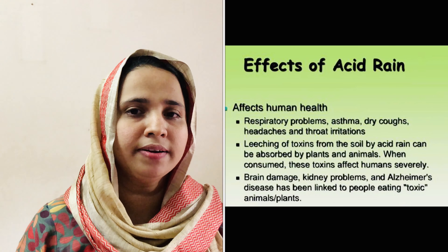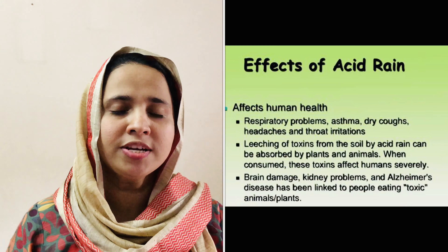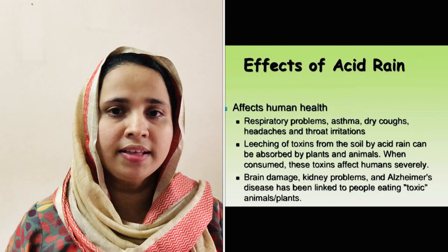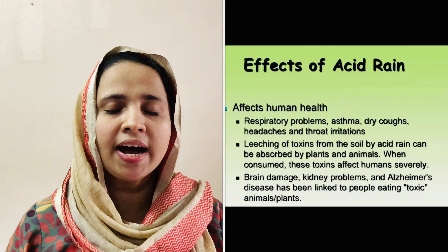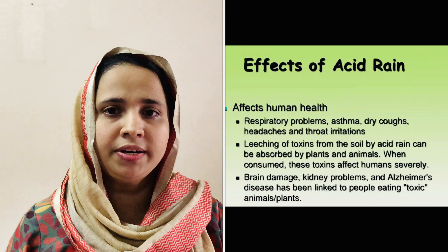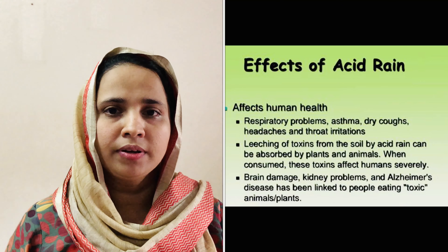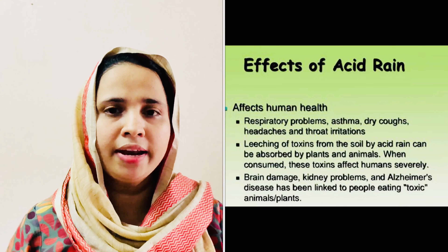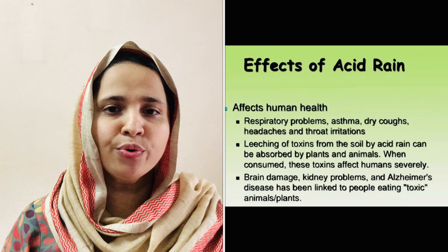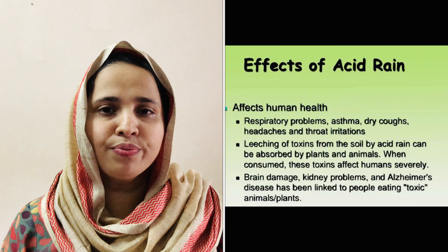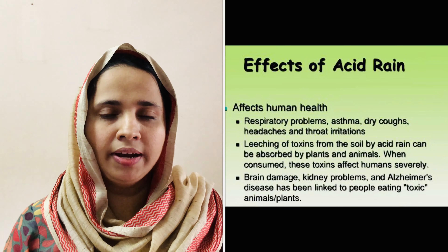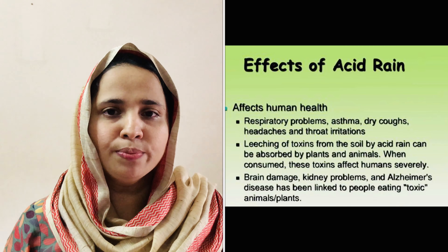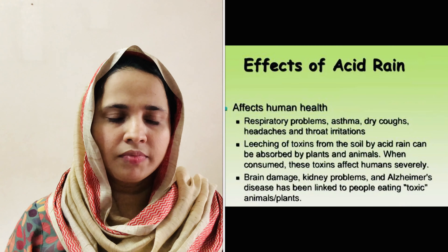Acid rain has severe ecological impacts and is a serious problem in several areas. The acid droplets in the air as well as acid-contaminated potable water cause respiratory, neurological, and digestive diseases in human beings and animals. Acid rain also causes corrosion of pipes, leading to the leaching of heavy metals such as iron, lead, and copper into drinking water, which is extremely hazardous to consumers.